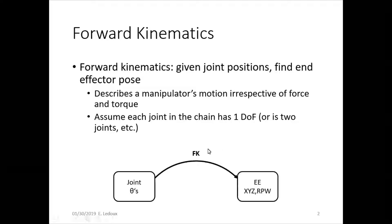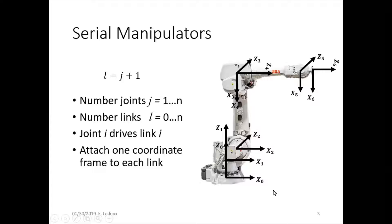To do forward kinematics, we start with joint positions and calculate the XYZ position and roll pitch yaw orientation of the end effector. For serial manipulators, this is pretty straightforward.